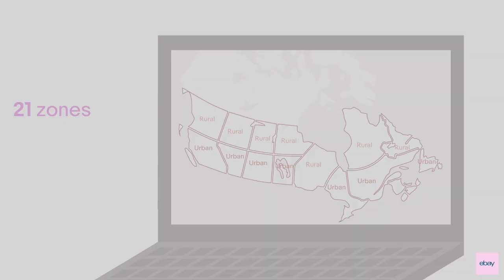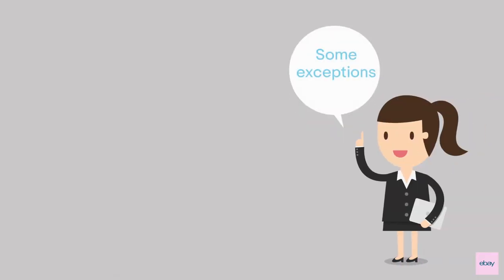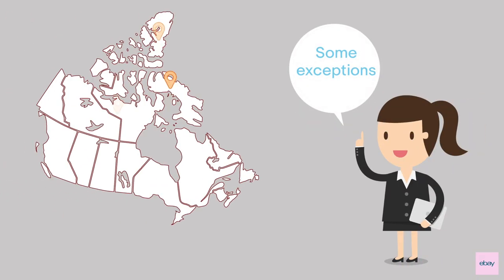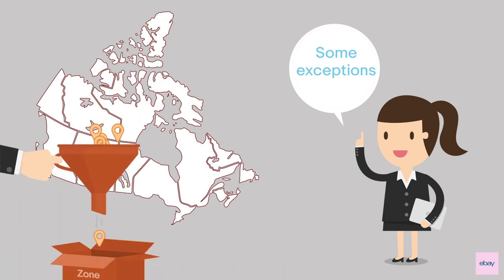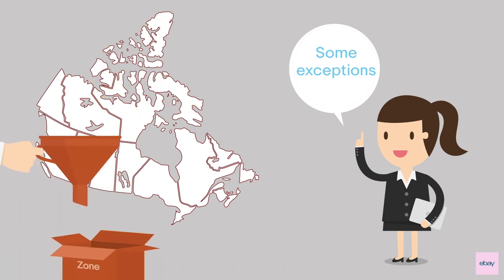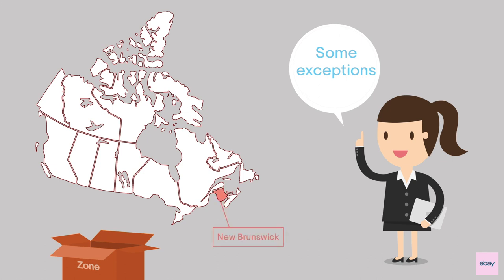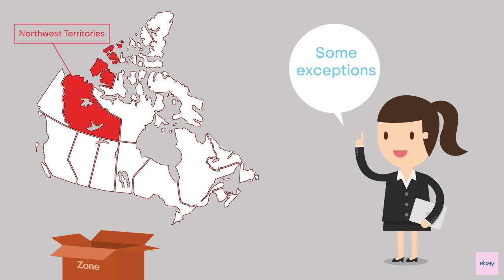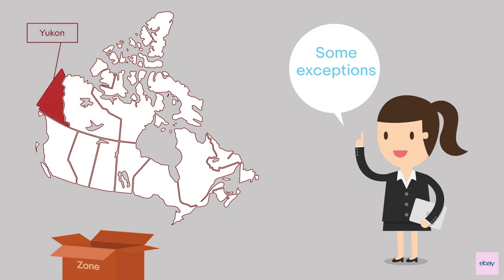There are some exceptions where, for a province or territory, all postal codes fall within one zone. This is true for smaller or less densely populated provinces and territories, such as New Brunswick, Prince Edward Island, the Northwest Territories, Yukon, and Nunavut.